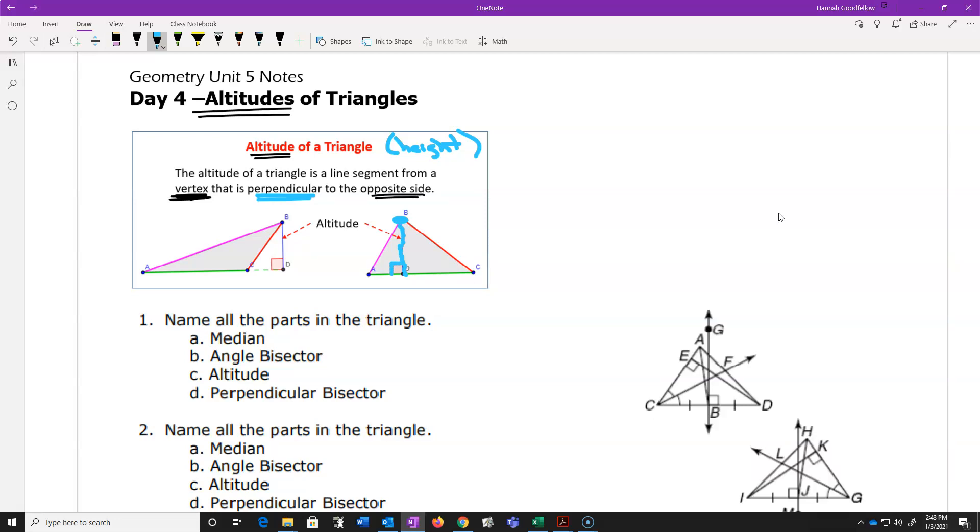We measure straight down to the other side at a 90 degree angle. We don't measure diagonally. That makes no sense. It's just like, how far is it straight down to the ground?